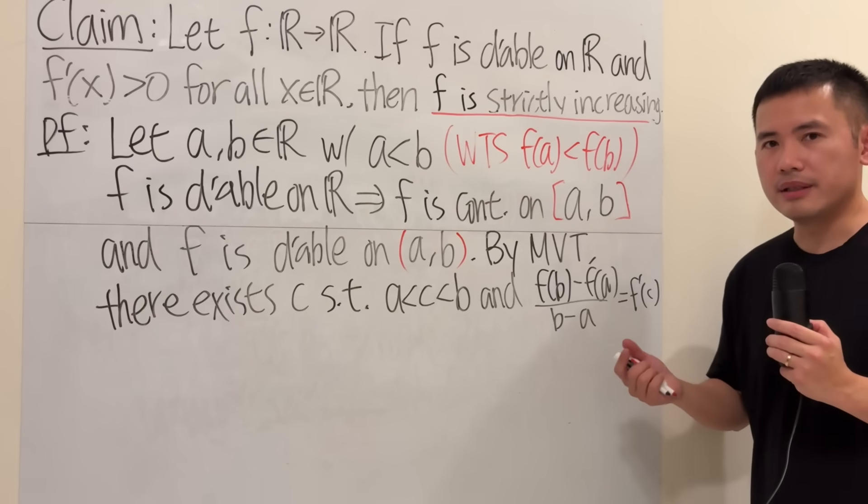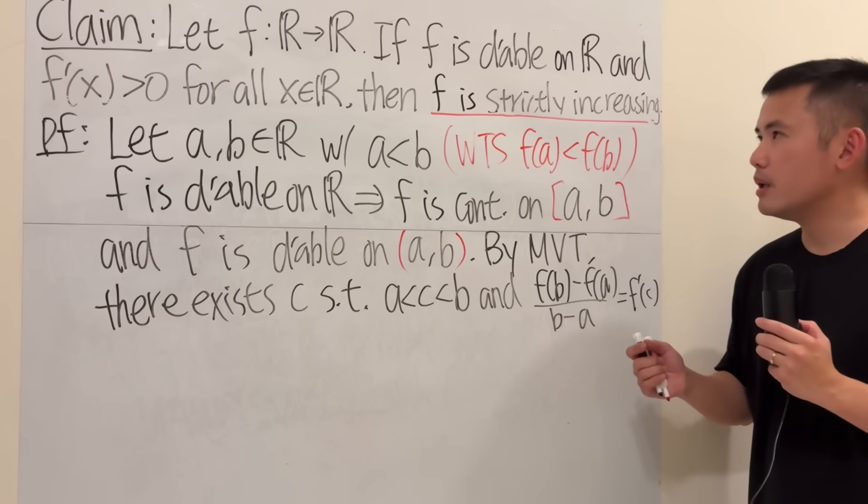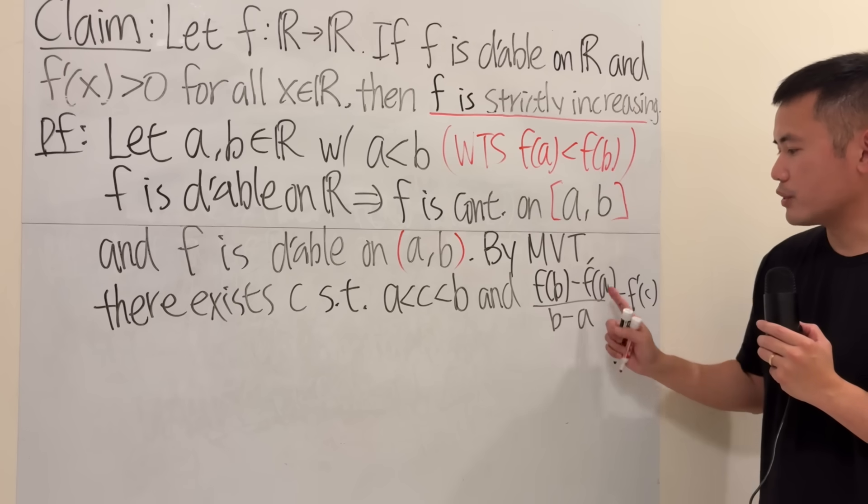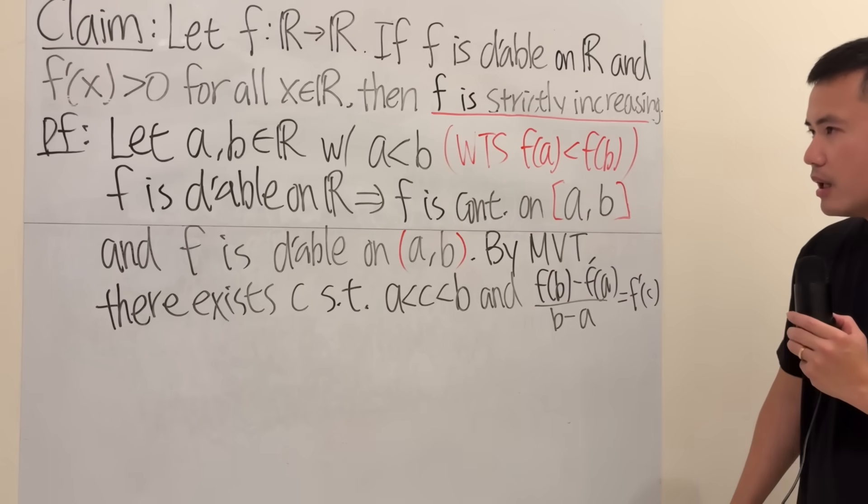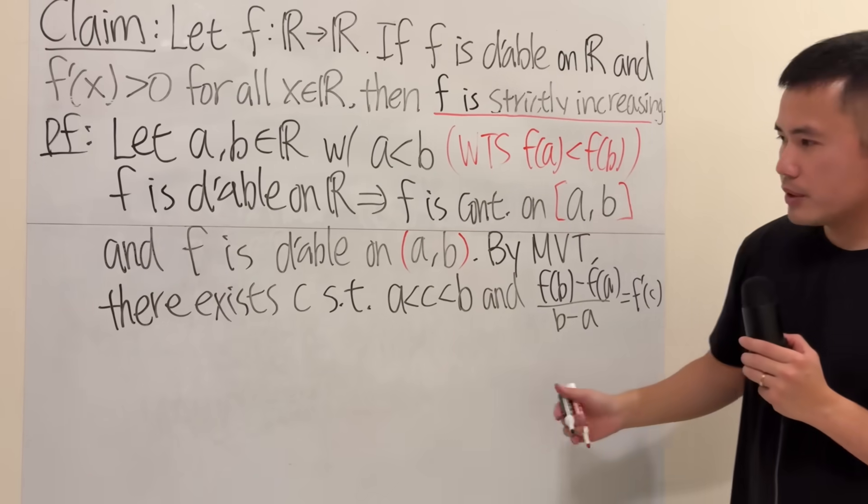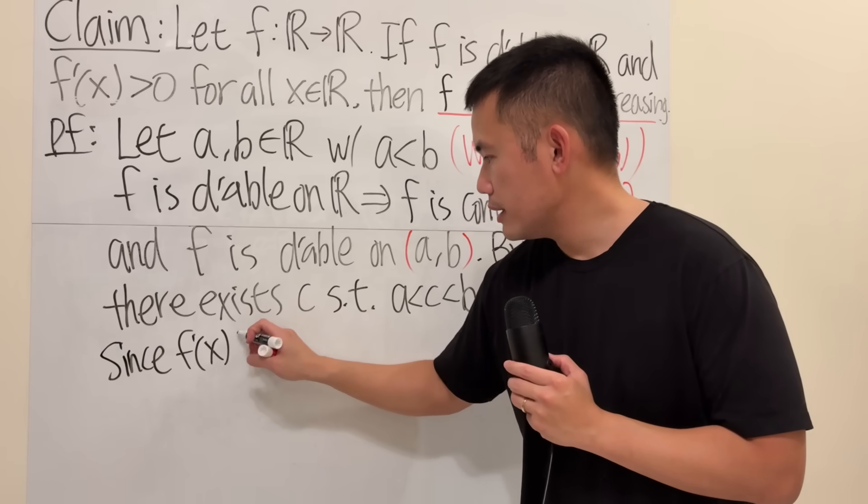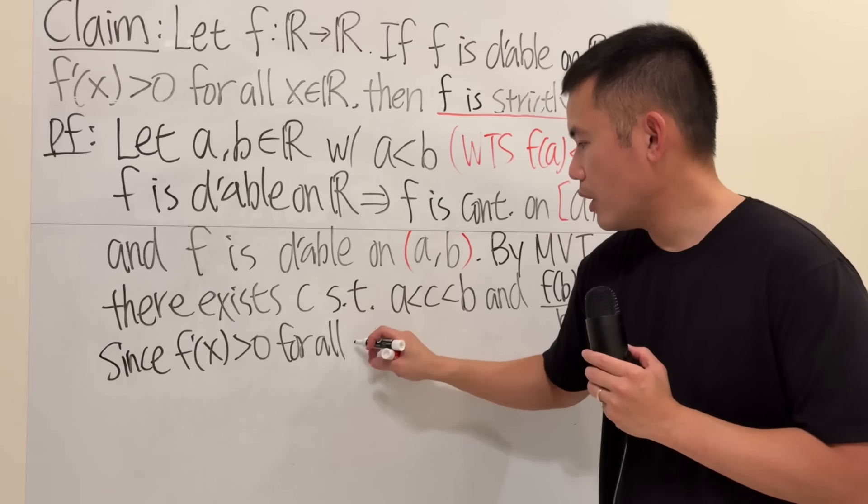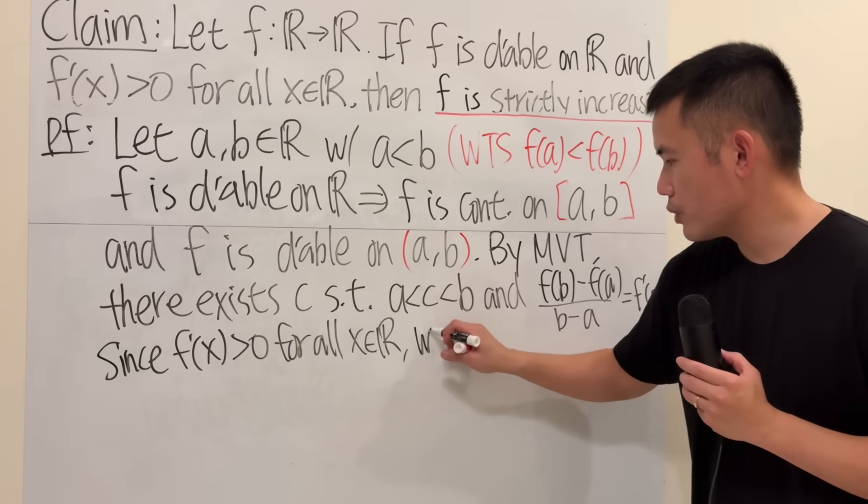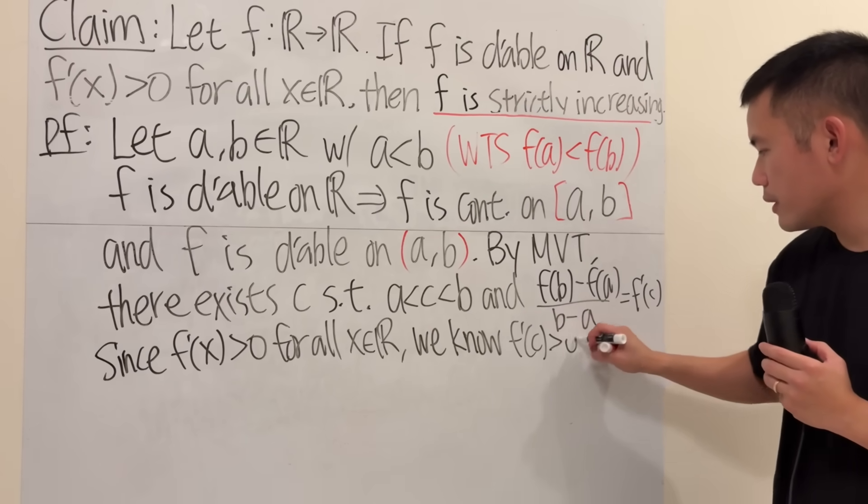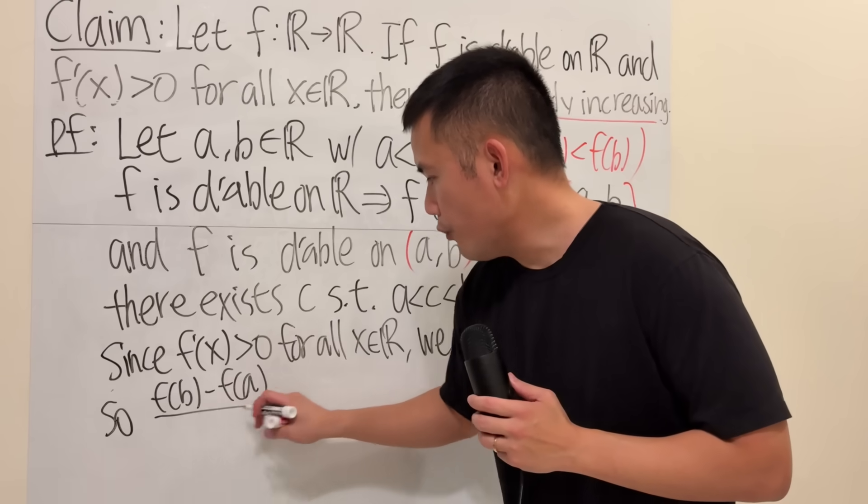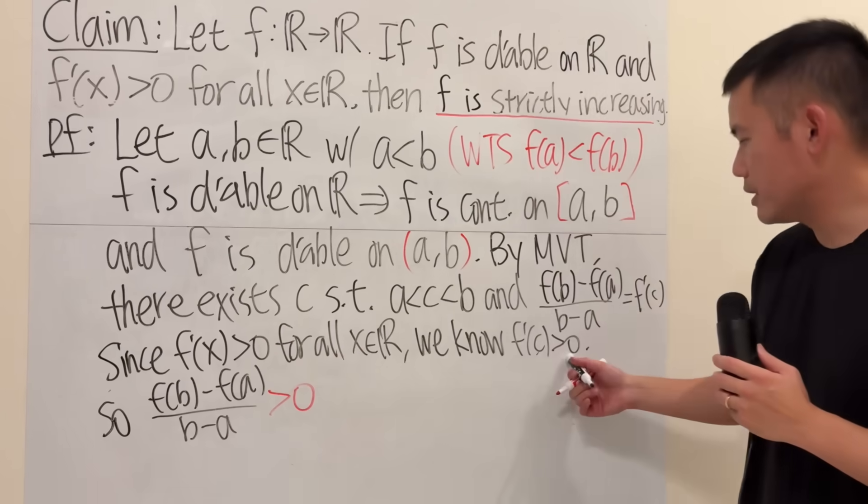Now, let's go back a little bit. This is the intuition of why we should be using the mean value theorem. Again, f is differentiable because here you have the derivative. And then more precisely, we are talking about the value of the functions. So mean value theorem is a great choice. Now, another thing that we haven't used is f prime of x is greater than 0 for all x. So I'll just say since the derivative is always greater than 0 for all x, we must have f prime of C being greater than 0. So [f of b minus f of a] over [b minus a] is greater than 0.